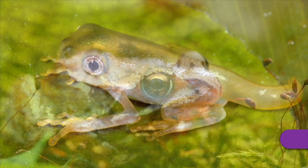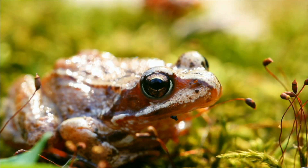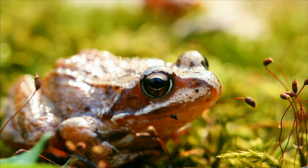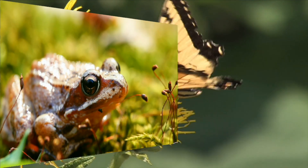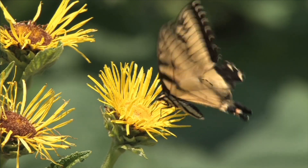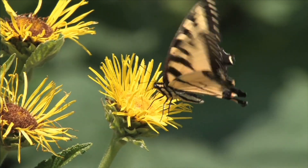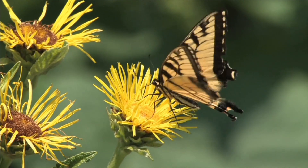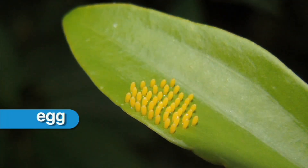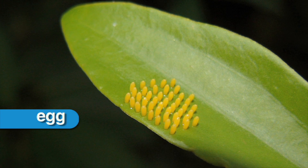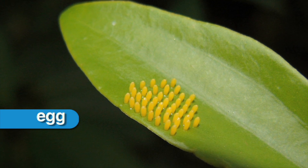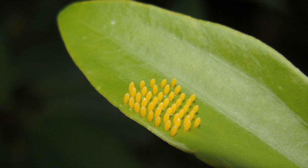A butterfly is an insect. A butterfly's life cycle begins with a very small egg. After the egg hatches, the butterfly begins its second stage called the larva, or caterpillar.